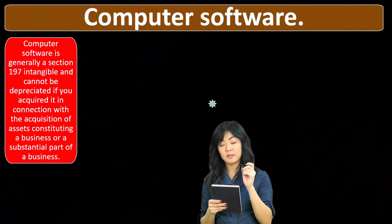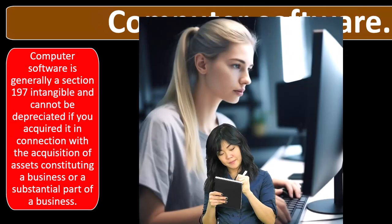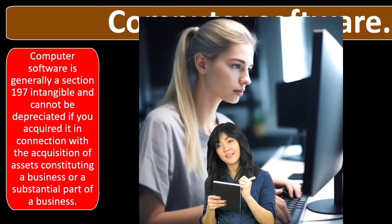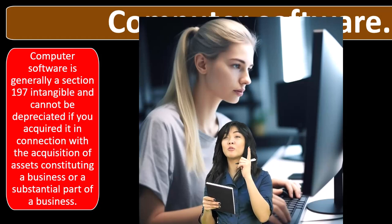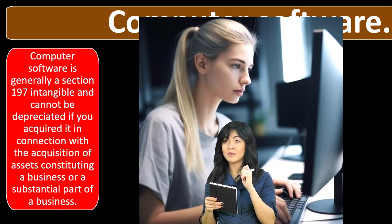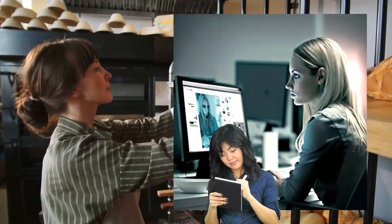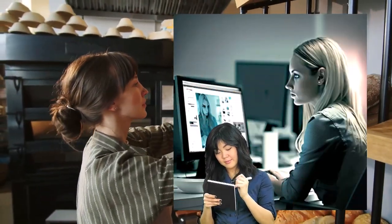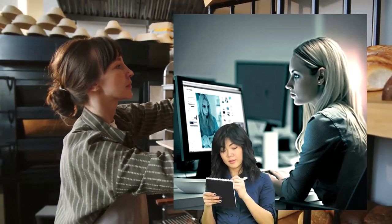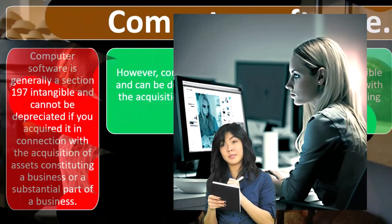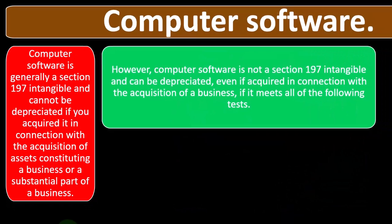Computer software is generally a Section 197 intangible and cannot be depreciated if you acquire it in connection with the acquisition of assets constituting a business or a substantial part of a business. Computer software is becoming a bigger and bigger issue for different individuals as they start their businesses, so there are special rules with regards to computer software.